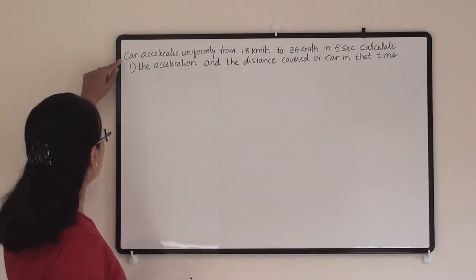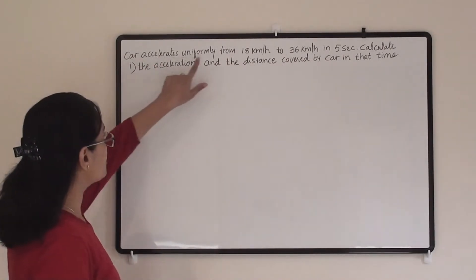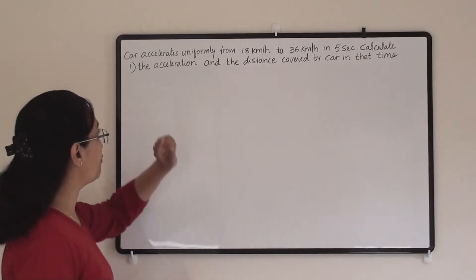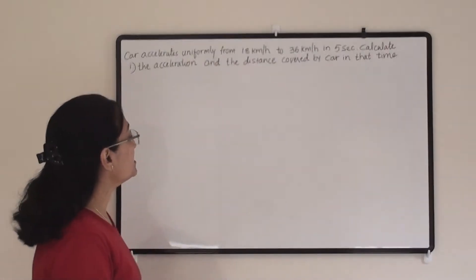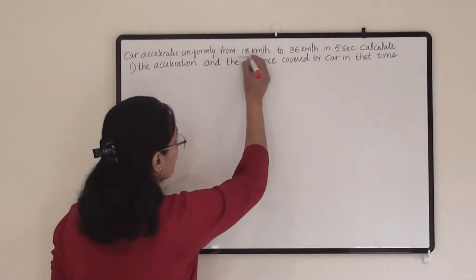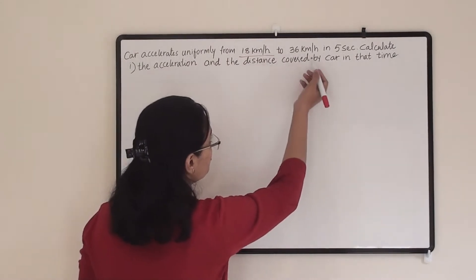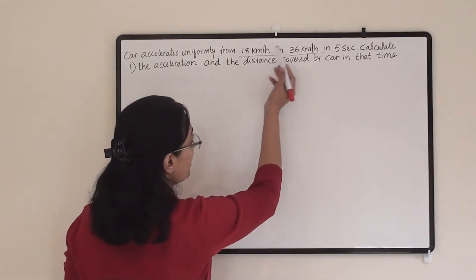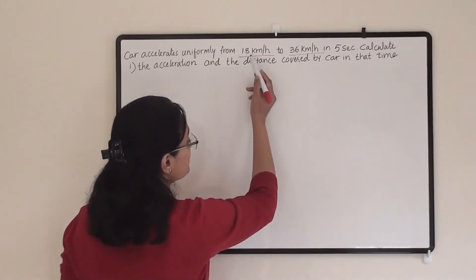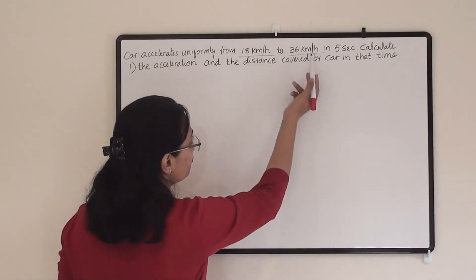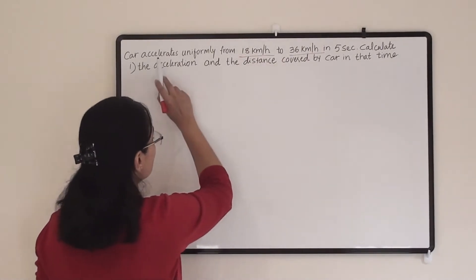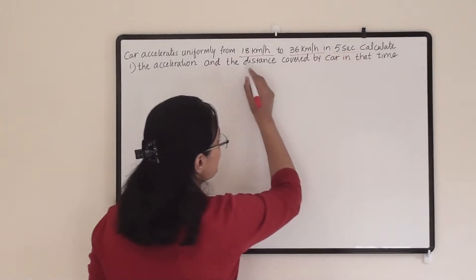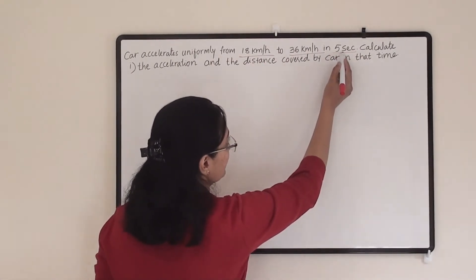The example is: a car accelerates uniformly from 18 km/h to 36 km/h — so the car's speed is increasing uniformly because acceleration is uniform — and this acceleration happens in 5 seconds.